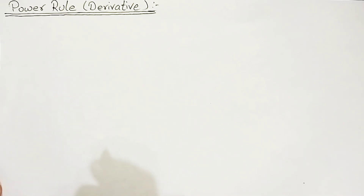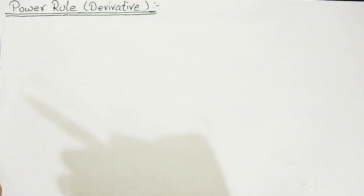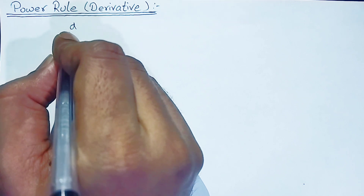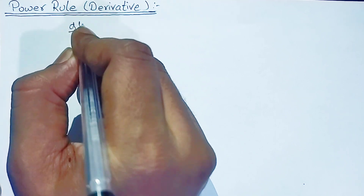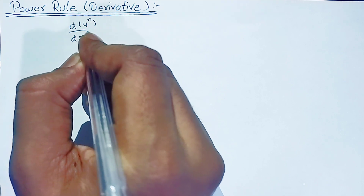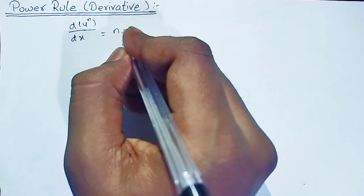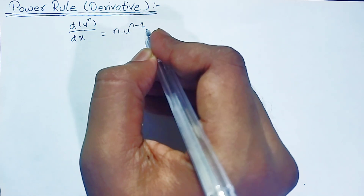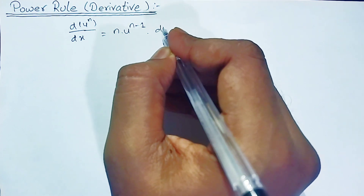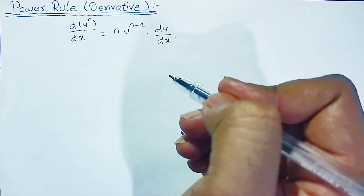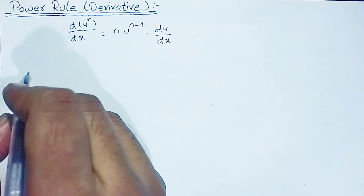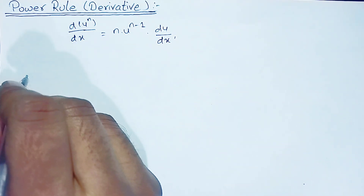Hello everyone, welcome back to Civil Learning Online YouTube channel. Today in this video I am going to discuss the power rule of derivatives. Before beginning the numerical examples, let's first learn what power rule says: the derivative of u to the power n is n times u to the power n minus 1, times du upon dx.